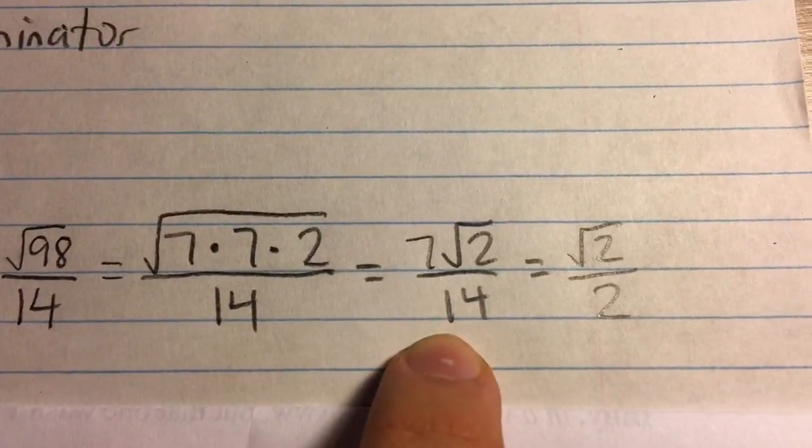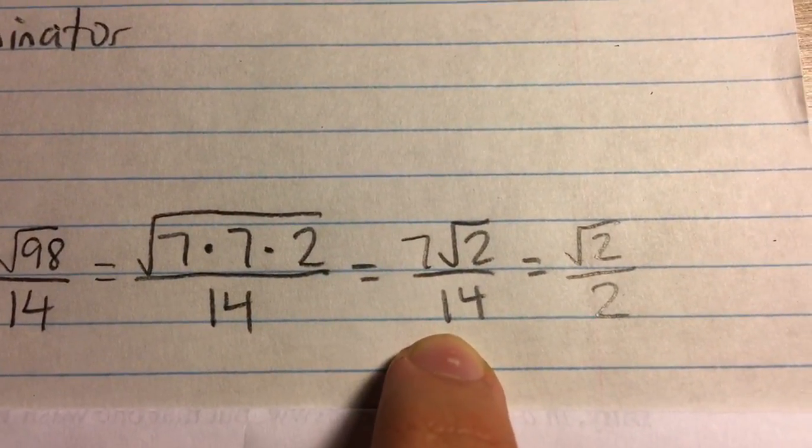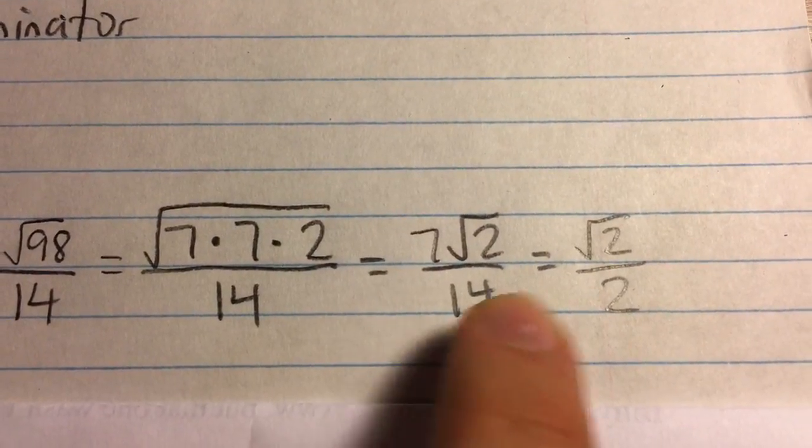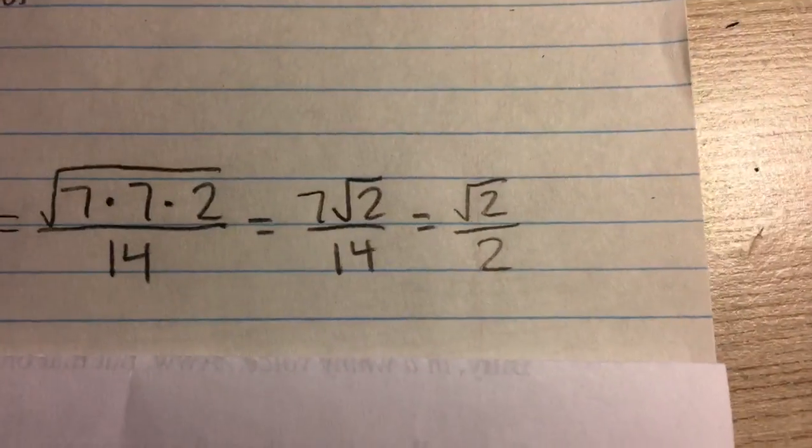And now you can see 7 over 14, we can divide both by 7 to get root 2 over 2 as our final answer.